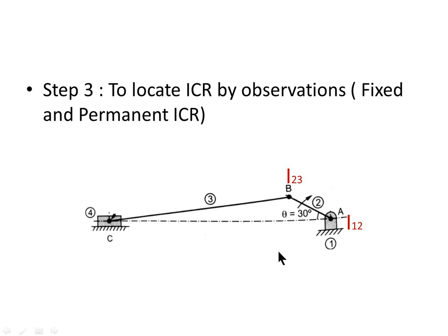Link 3 is connected to link 4 with turning motion, so I34 is located at point C. Now link 4 is a slider, so it has linear motion. We consider the slider moving with a center at infinity — an arc of infinite radius is approximately a straight line. So I14 lies at infinity along a line perpendicular to the motion of the slider. Since the slider moves horizontally, we draw a vertical line, and I14 is at infinity along that line.